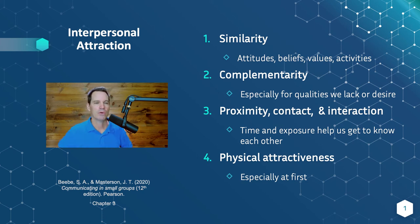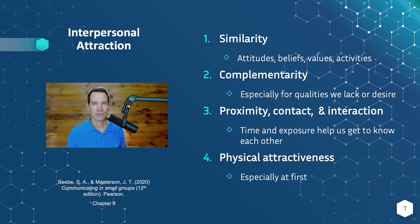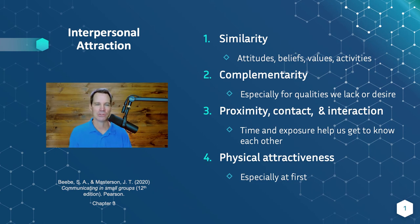And number four is physical attractiveness — at least at first. I mean, it's the whole reason why I tried to talk to my wife the first time. I had never met her, but I found her a little attractive — I'll be honest. So I took a deep breath and tried to go up and talk to her. It didn't work out that well in that first conversation, but I tried.